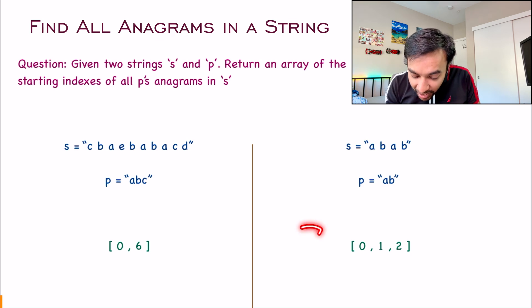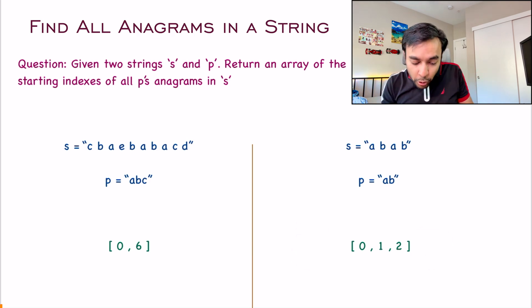Hence, the answer to the second test case will be 0, 1 and 2 because you were able to find an anagram at each of these positions. So if you feel that you have now understood the problem statement even better, feel free to try it out. Otherwise, let us dive into the solution.